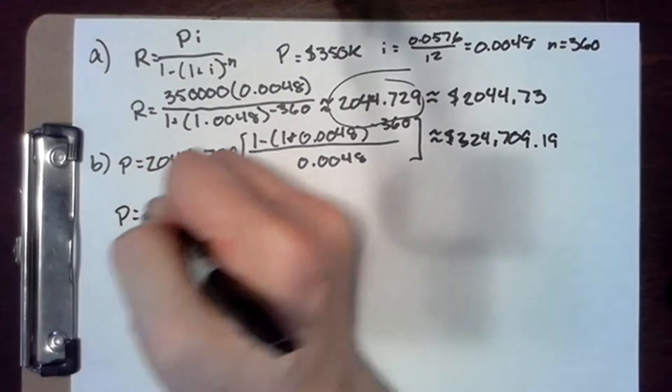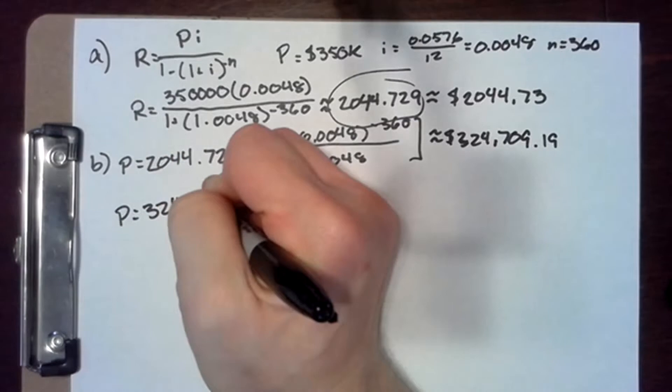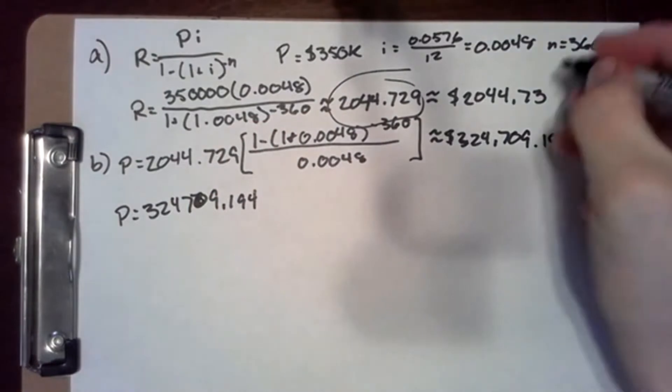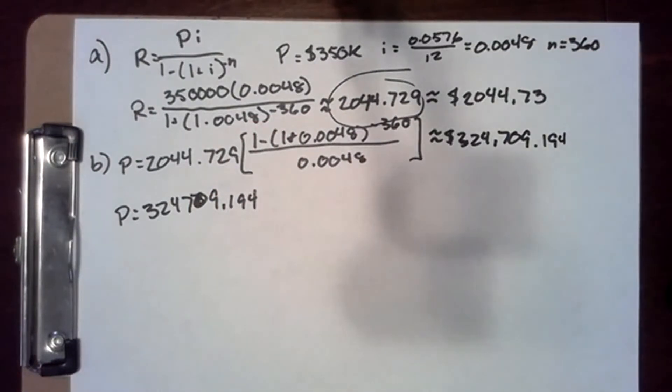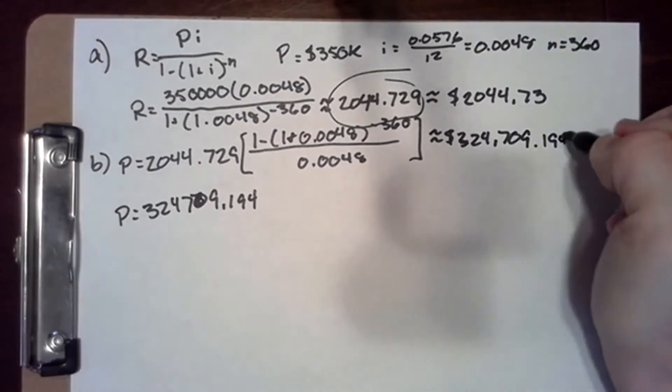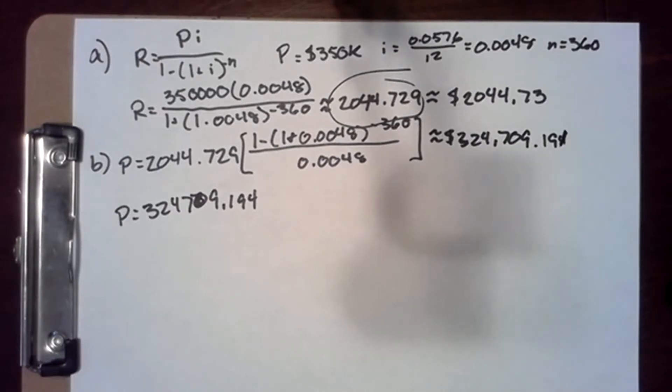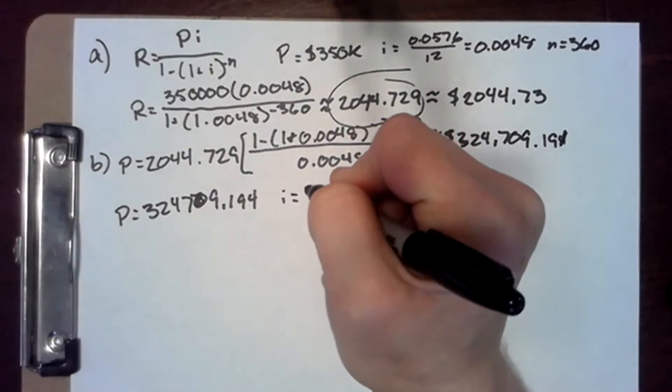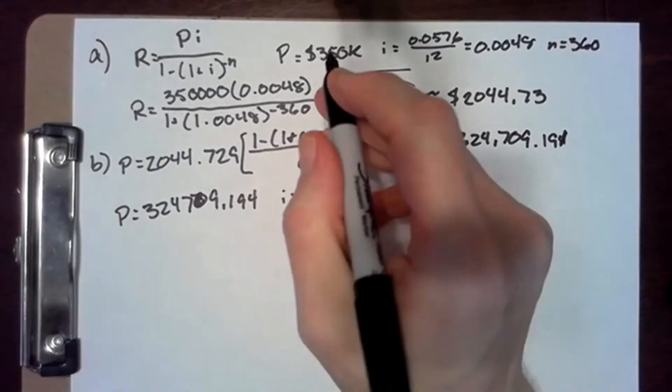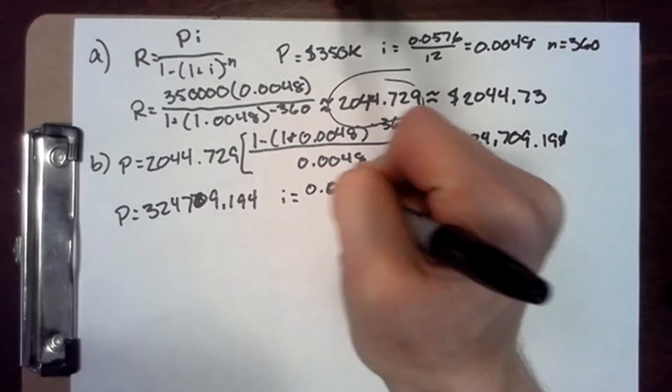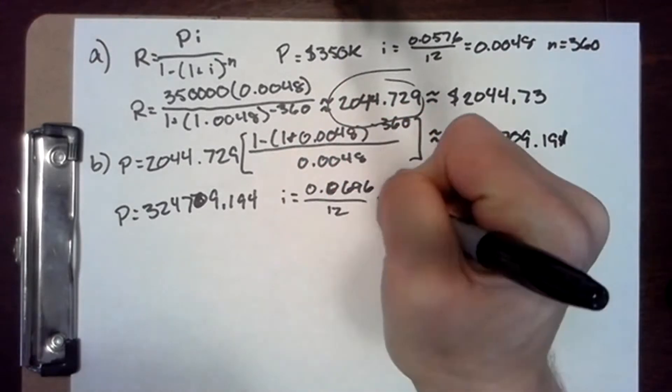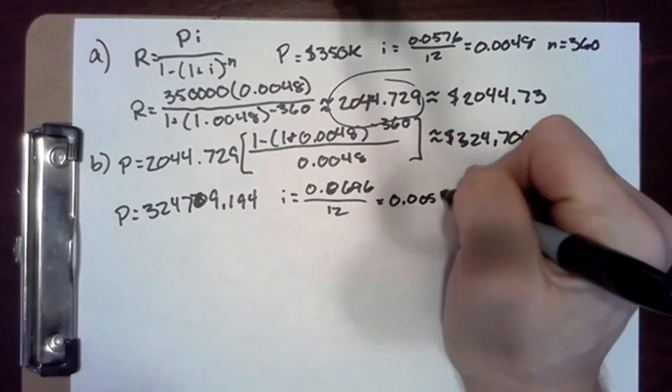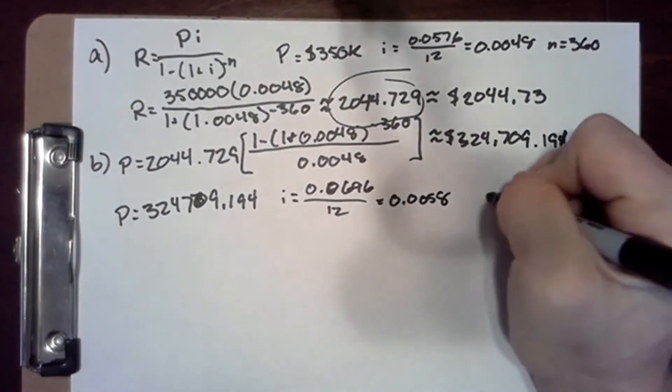For this, P equals $324,709.194. We're using the actual value we would have calculated here. i equals 0.0696 over 12, which is 0.0058, and n equals 300.